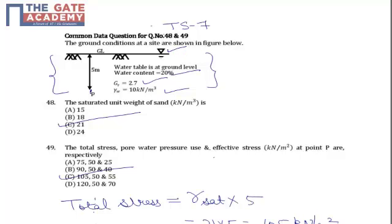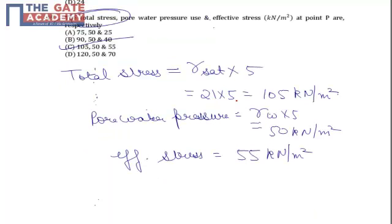Total stress is given by saturated unit weight in our case because the soil is fully submerged, that means it is saturated when we are talking about total stress case. So total stress is gamma sat into 5, or 21 into 5, it comes out as 105 kilonewton per meter square.